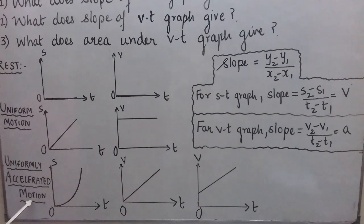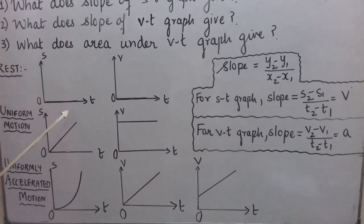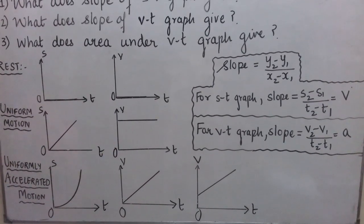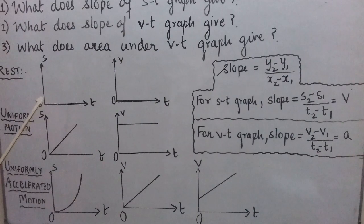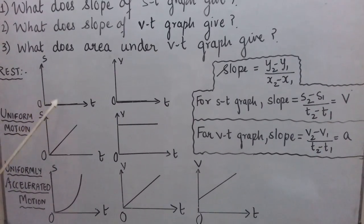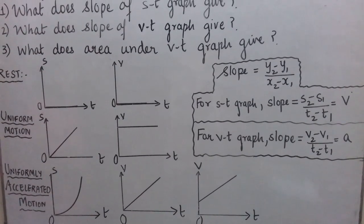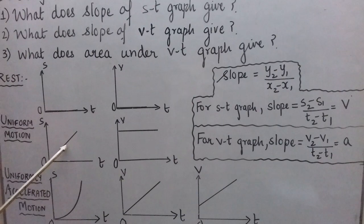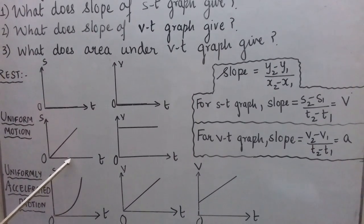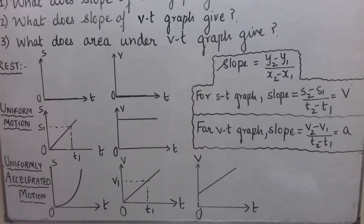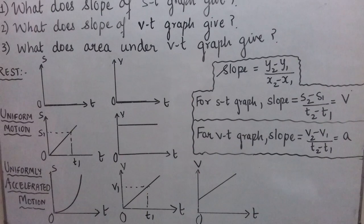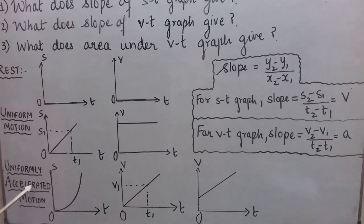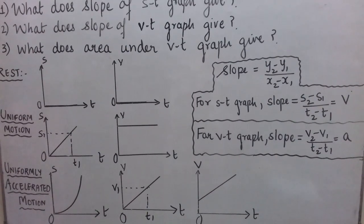We have seen three types of graphs — ST, VT, and AT — for rest, uniform motion, and uniformly accelerated motion. So the first use of a graph is that from its nature or shape we can determine what kind of motion a body is having: whether it is at rest, uniform motion, uniformly accelerated motion, or maybe non-uniformly accelerated motion.